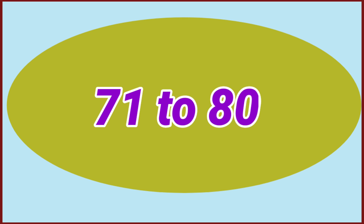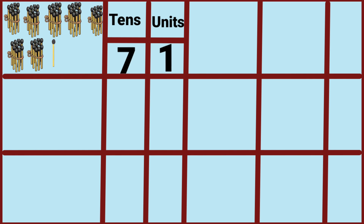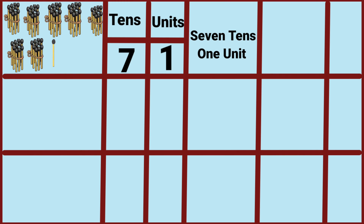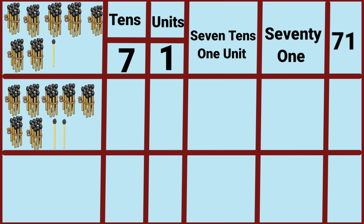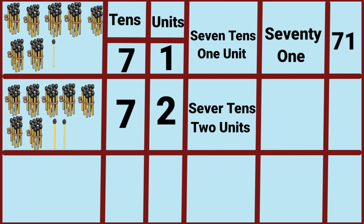Seventy-one to eighty. Seven tenths and one unit makes seventy-one. Seven tenths and two units makes seventy-two.